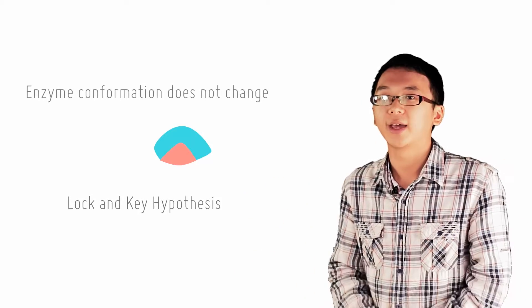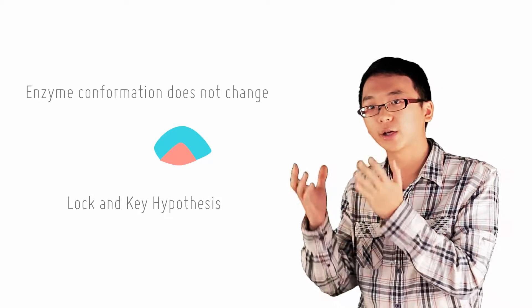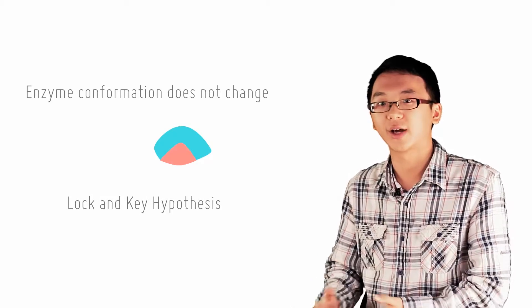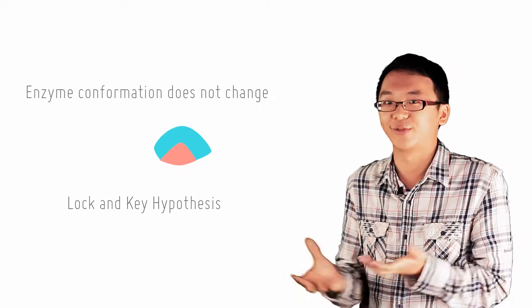The main point of this hypothesis is that the structure of the active site, your lock, remains the same throughout the enzymatic reaction. And the key must hence be perfectly complementary to the lock. That's why the lock unlocks and the enzymatic reaction happens.